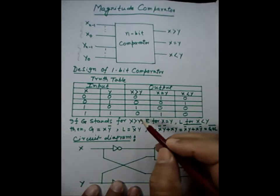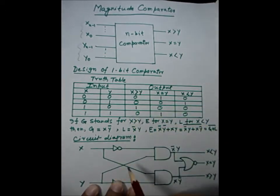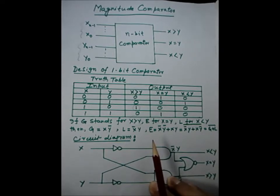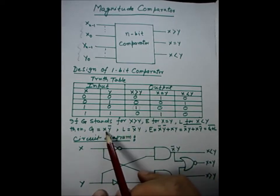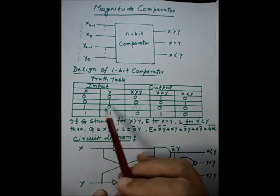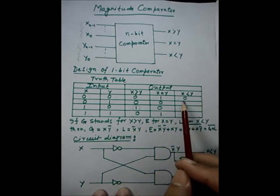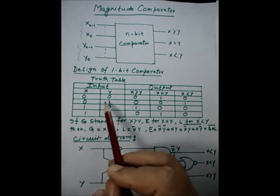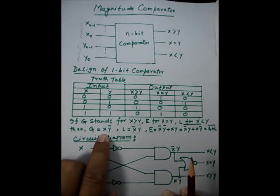Looking at the column for X greater than Y, we see a one appears in that row. We can derive this using a K-map or directly. Let G stand for greater than — G equals X·Ȳ, because a one appears when X is one and Y is zero. Similarly, for X less than Y, let L stand for less than — L equals X̄·Y, because a one appears when X is zero and Y is one.